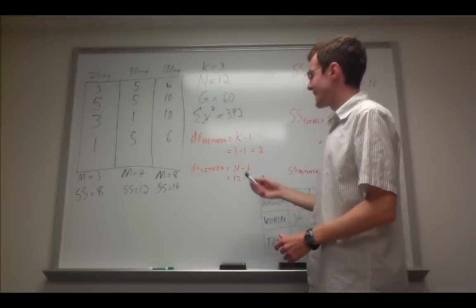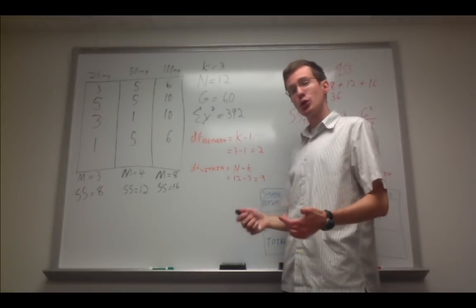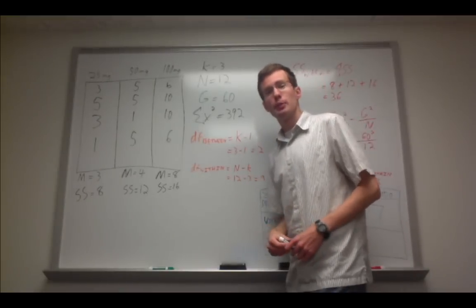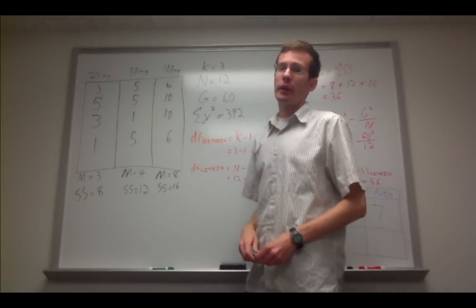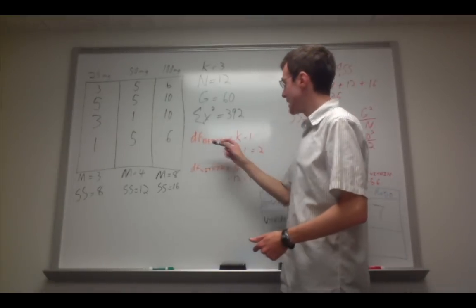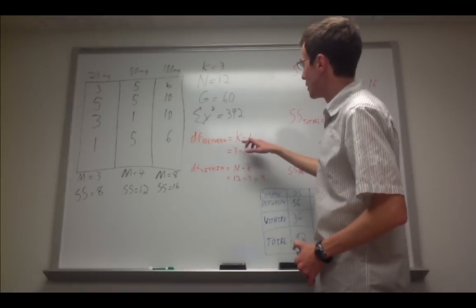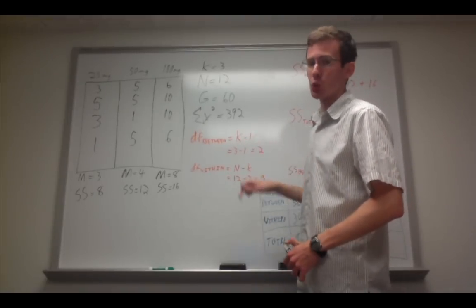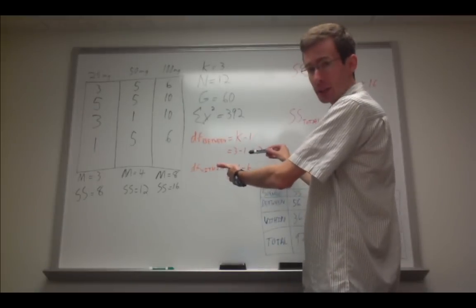We also need to take account of the degrees of freedom both between and within. This will be important when you look up your critical F-ratio in the F-tables. For DF between, this is simply the number of groups, or K minus 1. So 3 minus 1, in this case, is 2.